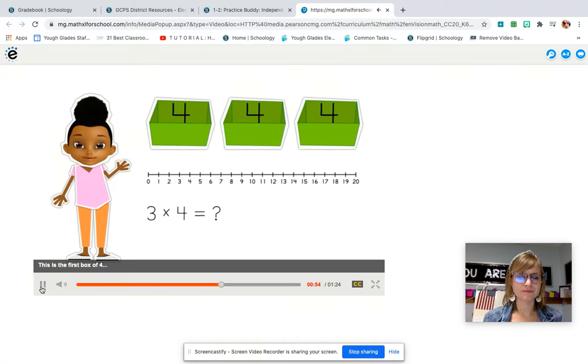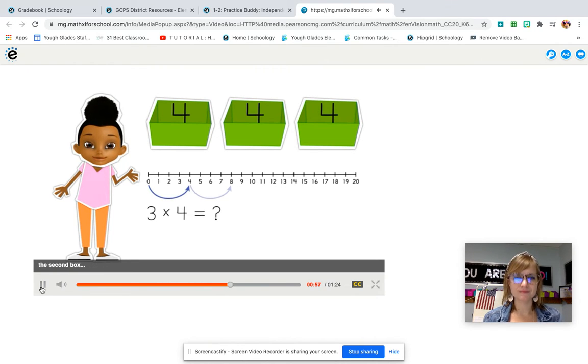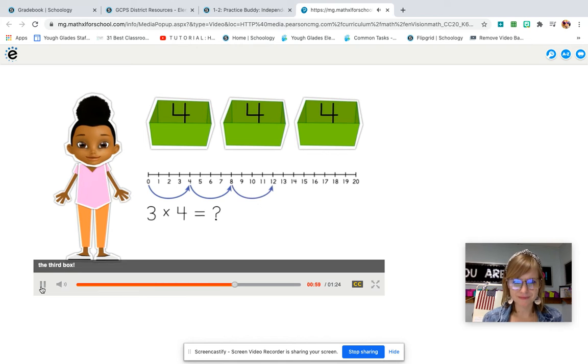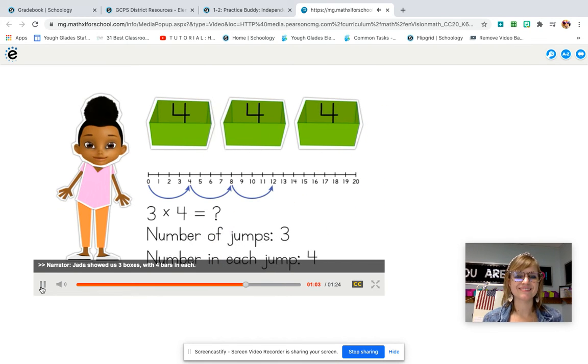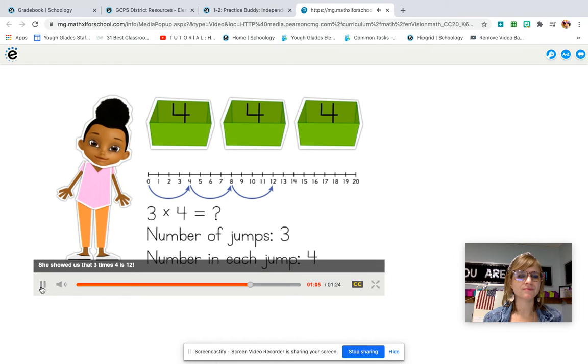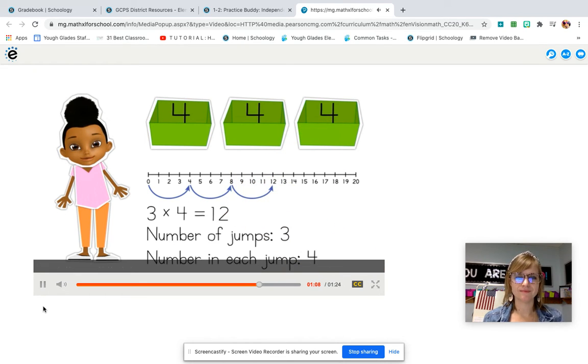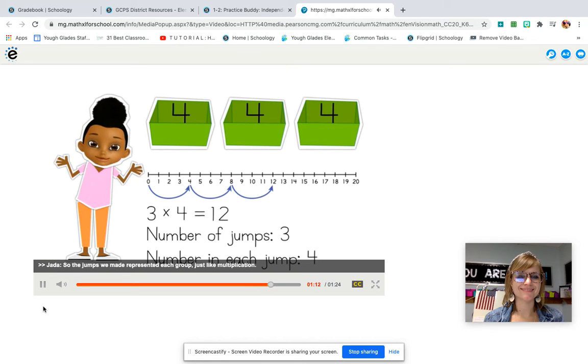Let me try. This is the first box of four. The second box, the third box. Jada showed us three boxes with four bars in each. She showed us that three times four is twelve. We bought twelve bars.